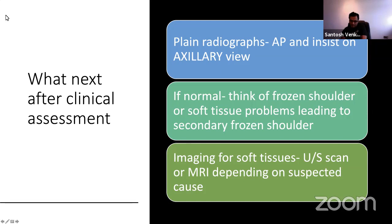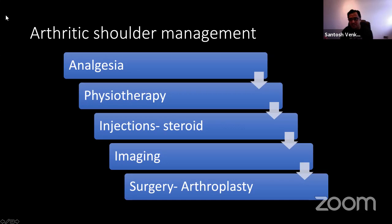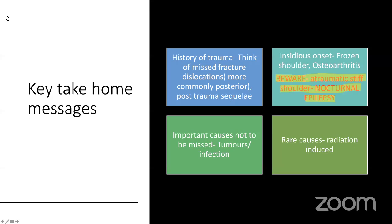For frozen shoulder management, it's a self-limiting condition. Depending on the stage, pain may be the predominant problem, and you can try steroid injections, physiotherapy, and painkillers — these can be interchangeable and don't need to be in a set order. In the UK there is evidence to support ultrasound-guided or x-ray-guided hydrodilatation of the capsule with steroid and high-volume low-dose local anesthetic. Other options include manipulation under anesthesia and arthroscopic capsular release. For an arthritic shoulder, after conservative management fails, shoulder arthroplasty — total or reverse — may be considered.